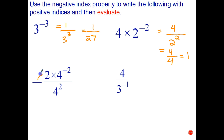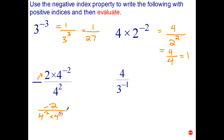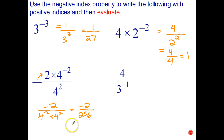With this one, we're going to move the negative sign up, giving us negative 2 on top. The 4 squared stays in the denominator, and the 4 to the negative 2 goes to the denominator becoming positive. That gives us negative 2 over 4 squared times 4 squared — so negative 2 over 256. Then simplify by dividing top and bottom by 2, and that's negative 1 over 128.